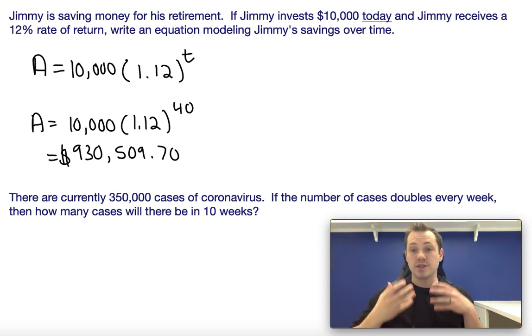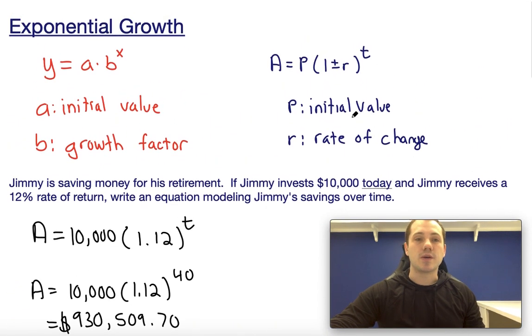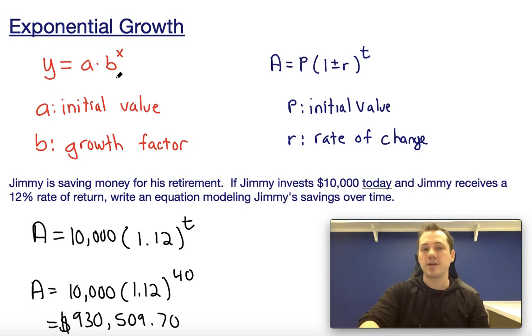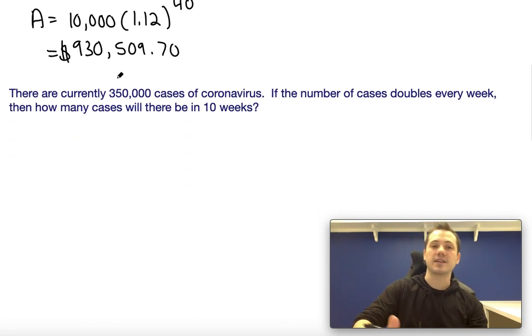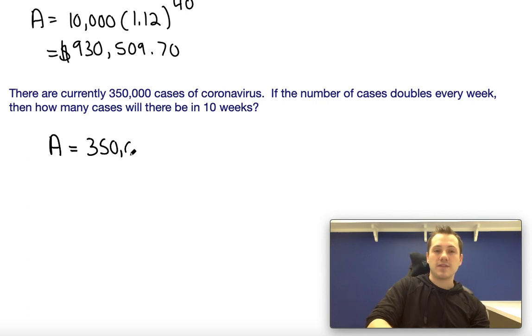You can see why people are so scared of this coronavirus if you understand exponential growth. For this, we're going to use the equation on the left here, where A is our initial value and b is our growth factor. What we'll find is the number of coronavirus cases, which I'm going to say is A, will be equal to 350,000 times 2 raised to the t.